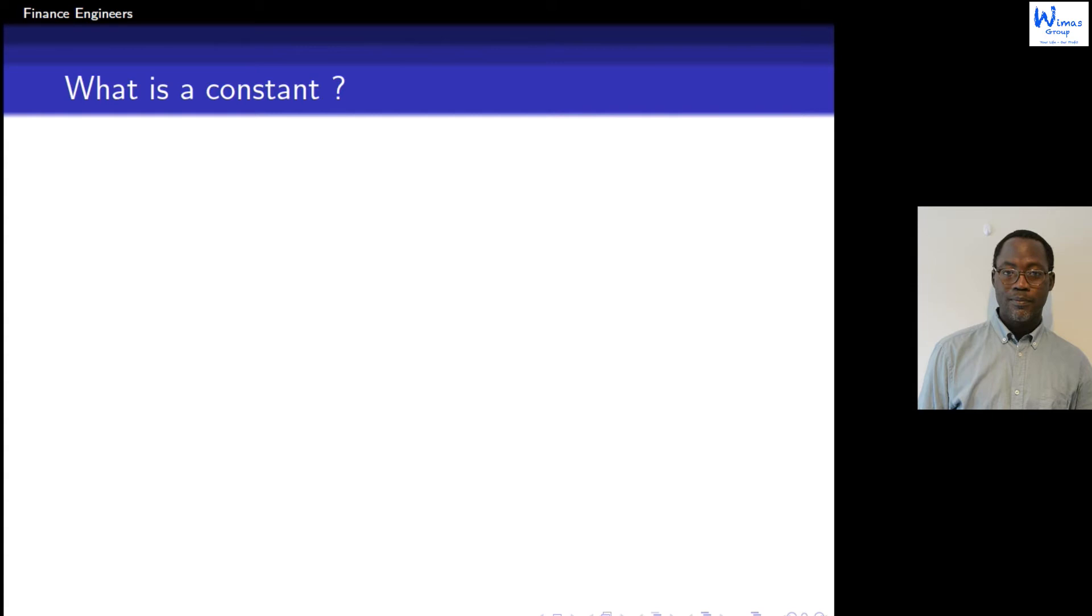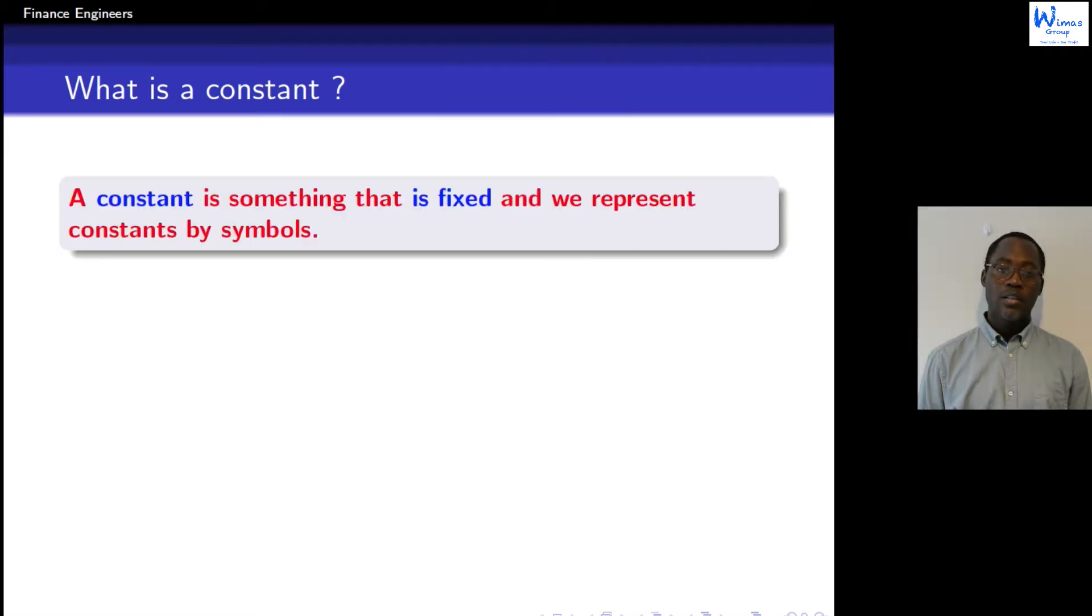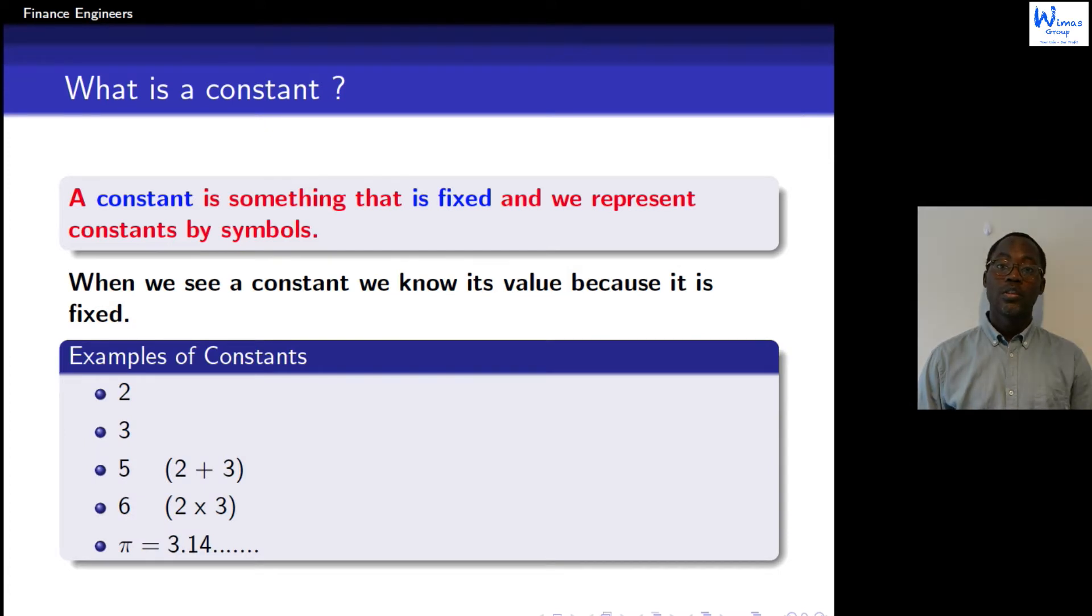The first one, question number one, is what is a constant? After understanding a constant and answering the second question, then we will jump to the main question for today. So a constant is something that is fixed. Often we use symbols like 2 or 3. Those are constants which represent something known and they are everywhere.